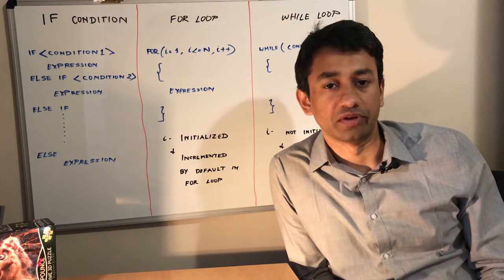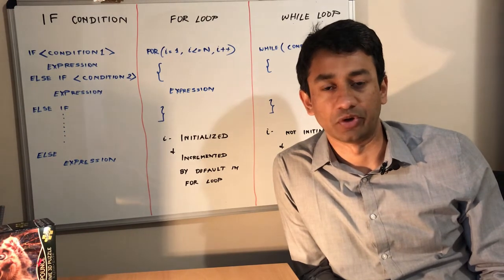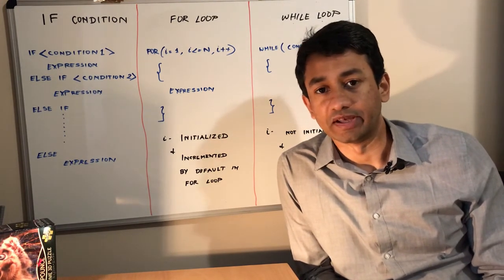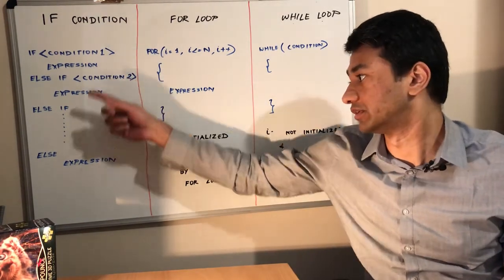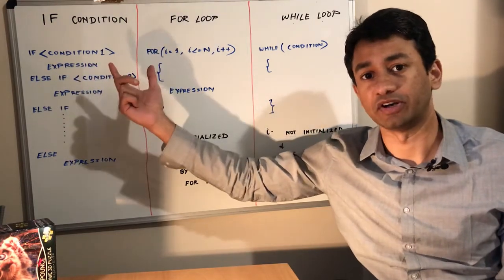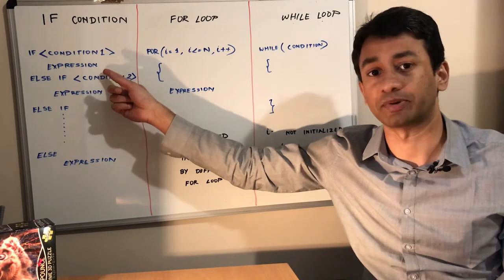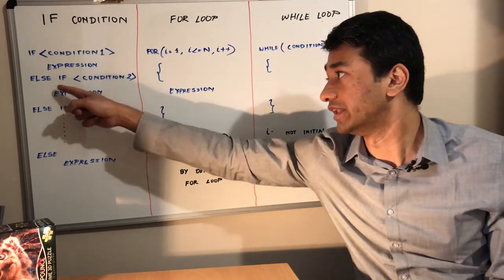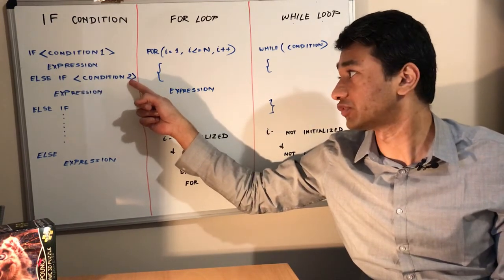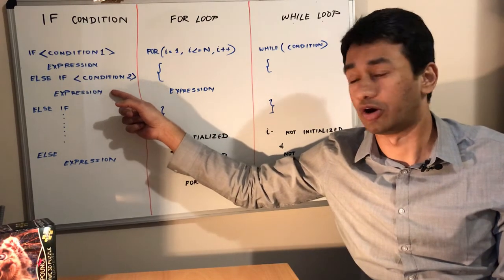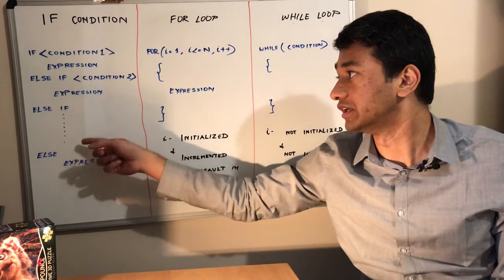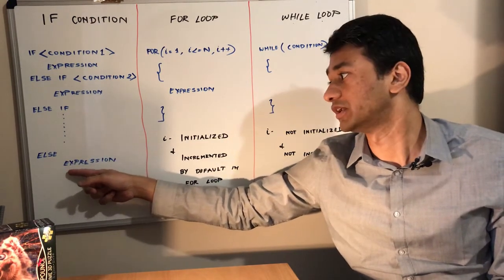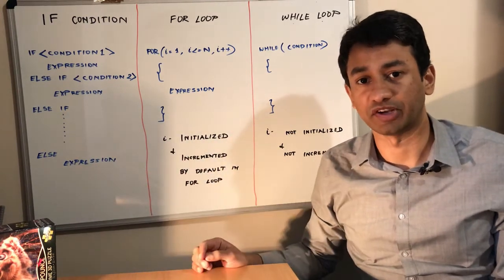Before getting into the tutorial video, I want to provide a brief introduction about what we are going to see and how a for loop is different from a while loop. The first one is the if-then-else condition. In an if-else condition, after the if statement we generally have a condition. If this condition is satisfied, we have an expression or statement that needs to be executed. If the condition fails, it goes on to the else-if and looks for a certain condition. If that condition is satisfied, it executes that expression. If none of the conditions are met, there will be a final else statement which tells exactly what needs to be done.